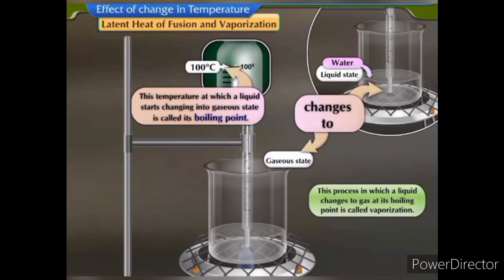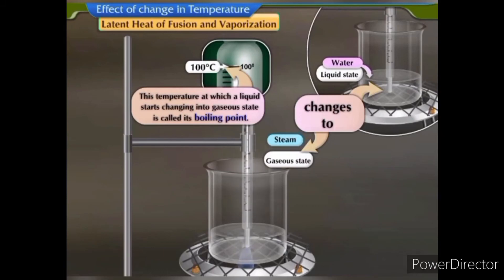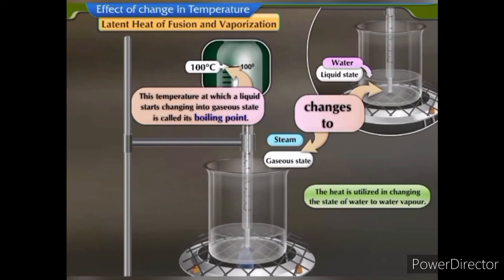This temperature at which a liquid starts changing into gaseous state is called its boiling point. This process in which a liquid changes to gas at its boiling point is called vaporization. At this temperature, water begins to boil and gets converted into steam. During this change of state from water to steam, the temperature remains constant till all the water gets converted into steam.